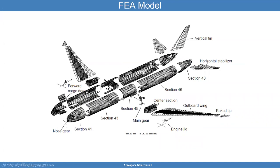Here's an example of an exploded view of this aircraft. You can see the wing, the main gear section, and the different sections. Typically different groups will take care of different sections of the aircraft, and all of them will be analyzed by the different teams. The finite element model components will be subjected to loading environments, and you can then use those finite element models to assemble the whole structure.